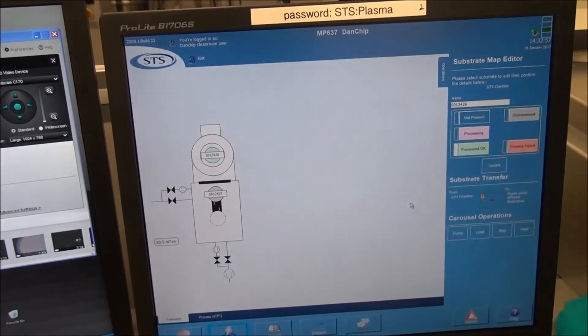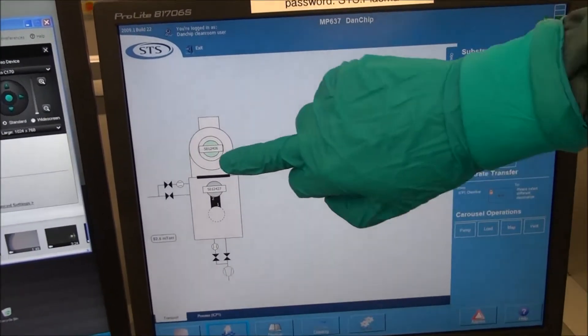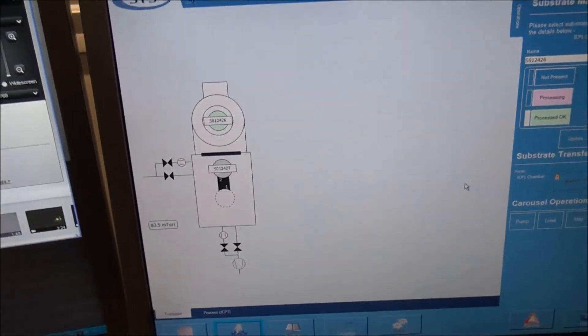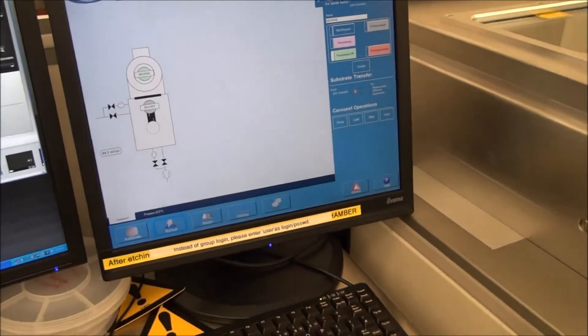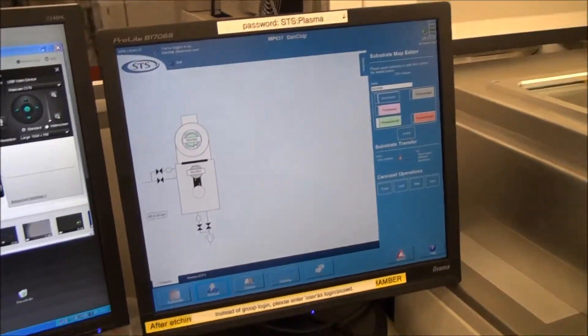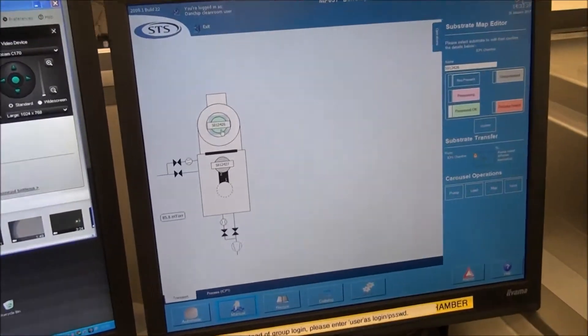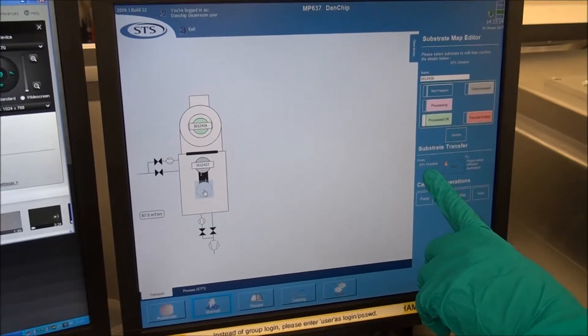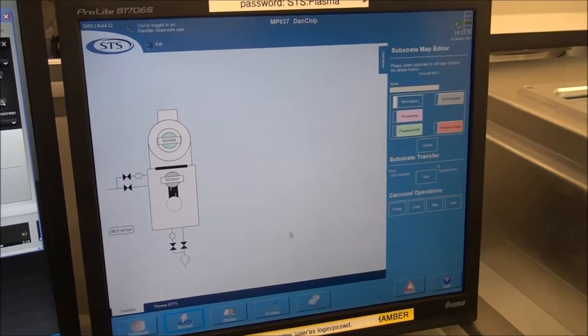The process is complete and we are ready to take the dummy wafer out of the load lock and replace it with the wafer. To do that, you press on the wafer you want to move and you click on the destination. That makes a valid transfer.